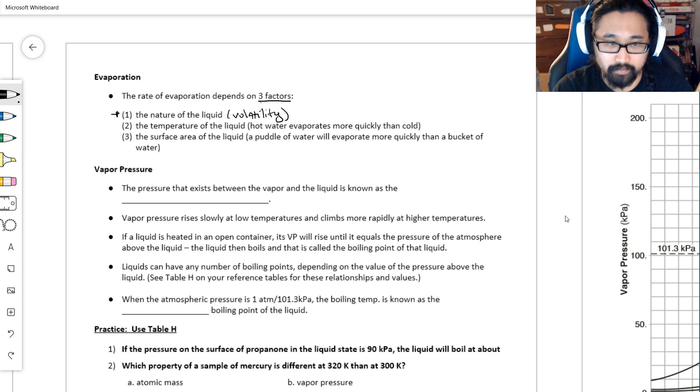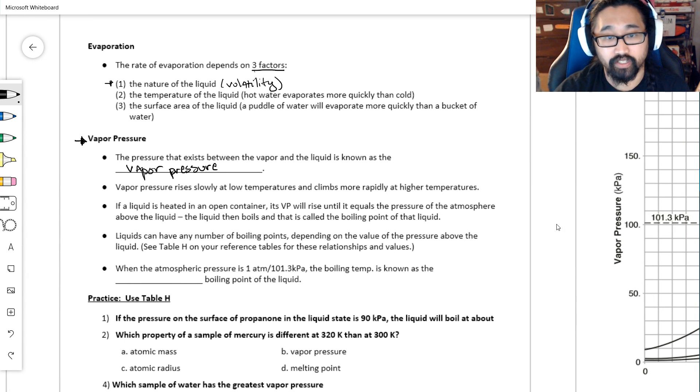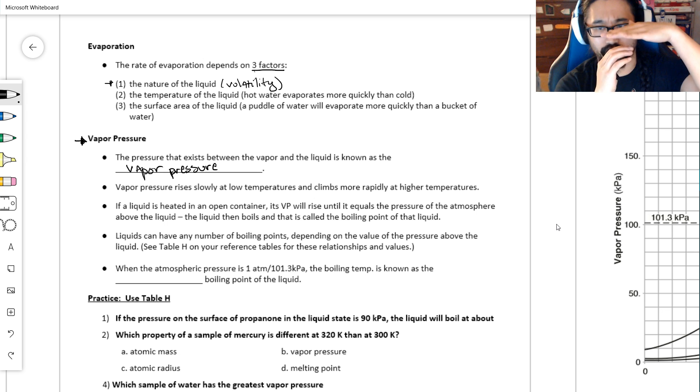The very last thing here is vapor pressure. Now this is the pressure that exists between vapor and liquid, so the vapor, the gas above a liquid and the surface of the liquid. That pressure that's being exerted is called vapor pressure. It rises slowly at low temperatures and climbs quickly the higher the temperature goes. When you heat a liquid in an open container, the vapor pressure will rise until it's the same as the pressure of the atmosphere above, and then the liquid will boil. I want to be very clear—vapor pressure is the pressure pushing upwards, not the pressure pushing downwards.